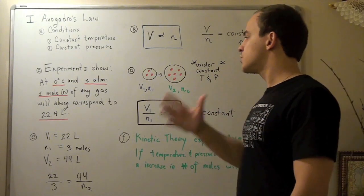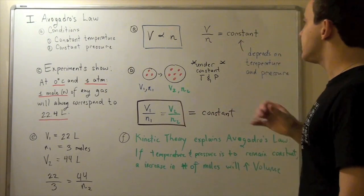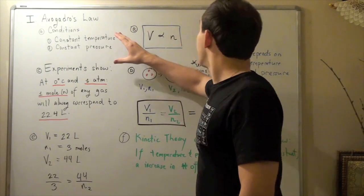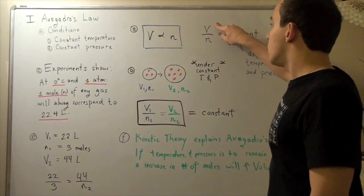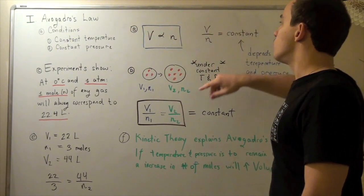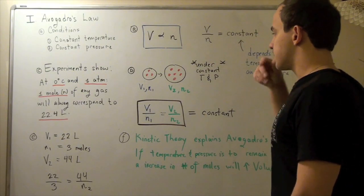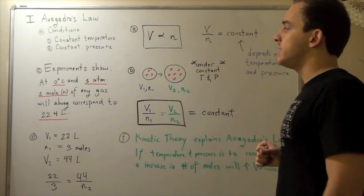So that brings up an interesting relation. That basically means, as long as our pressure and temperature are the same, this will always be true for any volume or for any number of moles. This will always be our constant. And we'll see why this is important in Part D.